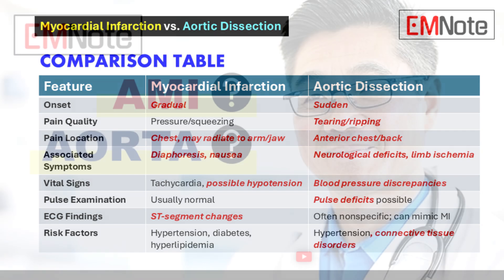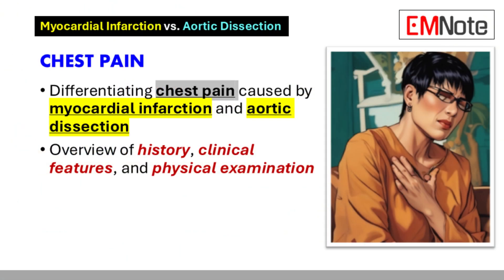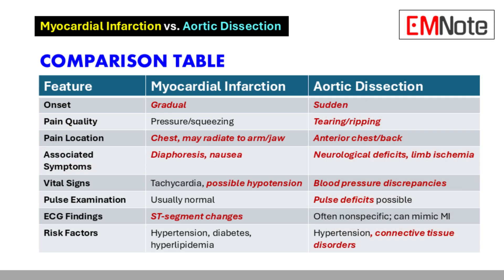Today, we will discuss how to differentiate between myocardial infarction and aortic dissection based on their clinical presentations. Chest pain is a common presentation in clinical practice, and its causes can range from benign to life-threatening. Two conditions that require immediate attention are myocardial infarction and aortic dissection. These conditions share some overlapping features but differ significantly in their history, clinical features, and physical examination findings.